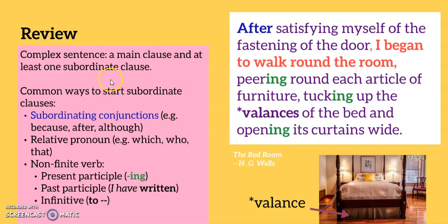A multiclause sentence is a complex sentence. It has a main clause and at least one subordinate clause. The main clause makes sense by itself. The first step to understand a multiclause sentence is to read it slowly. Pause at each comma and take a longer pause with the colons and semicolons. Remember that the writer has deliberately used punctuation to organise his or her ideas into sections, so the punctuation is there to help you.